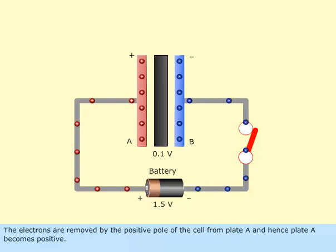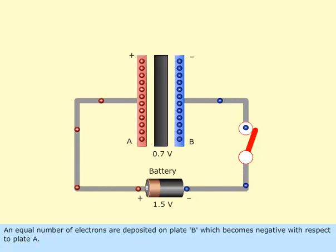The electrons are removed by the positive pole of the cell from plate A and hence plate A becomes positive. An equal number of electrons are deposited on plate B which becomes negative with respect to plate A.